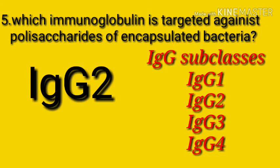IgG1 and IgG3 subclasses are rich in antibodies against toxins produced by diphtheria and tetanus bacteria, as well as antibodies against viral proteins. IgG2 antibodies are predominantly against the polysaccharide coating of certain disease-producing bacteria such as Streptococcal pneumoniae and Haemophilus influenzae.